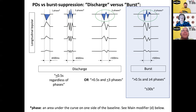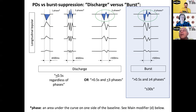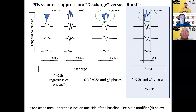This is burst versus periodic discharges. The number of phases is the key difference. To be a burst, it has to last more than half a second and have at least four phases. If either criterion is not met, it's just a discharge. If it's less than half a second, it doesn't matter how many phases — it's still a discharge.